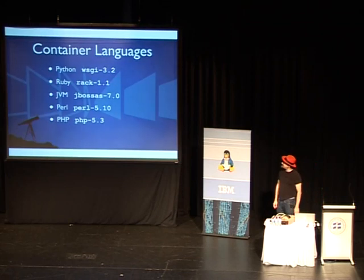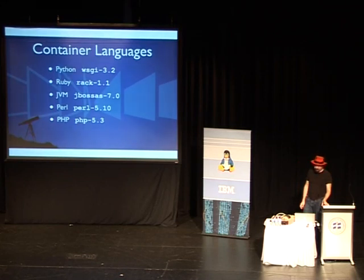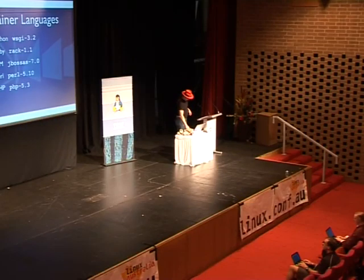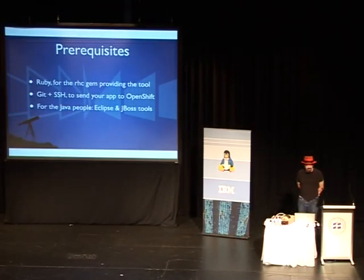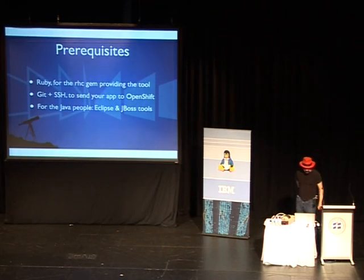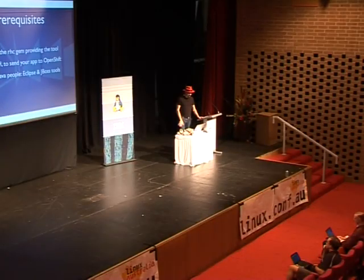OpenShift supports the following languages and containers: Python, Ruby, JVM, Perl, and PHP. The JVM is the latest and greatest, as befits the company that runs JBoss. The prerequisites are not hard — you need Ruby, which is everywhere except Windows machines. Ruby now comes by default on Mac OS. You also need Git and SSH, which developers, sysadmins, and interested geeks should already have on their machines.